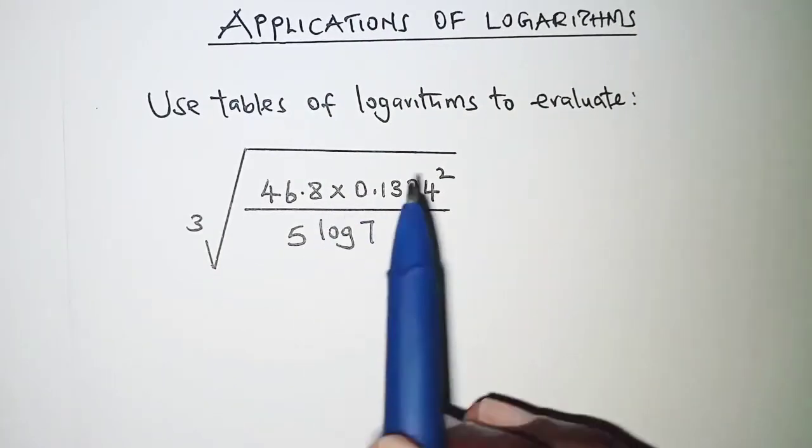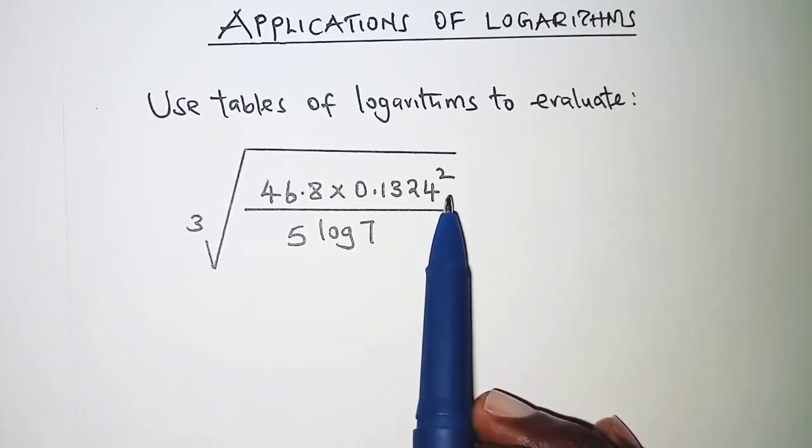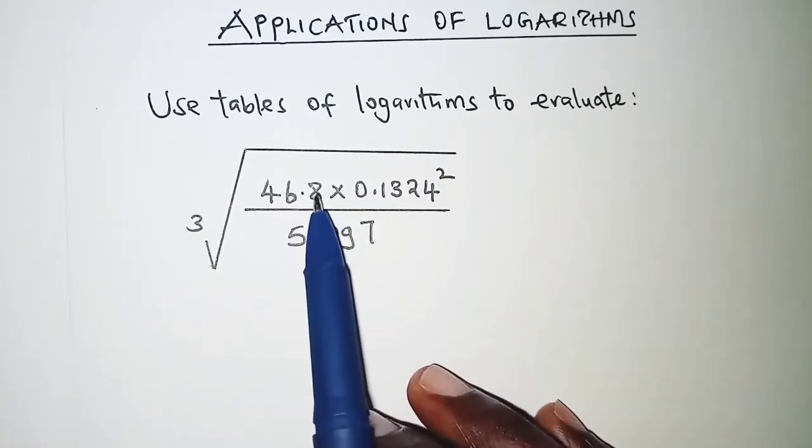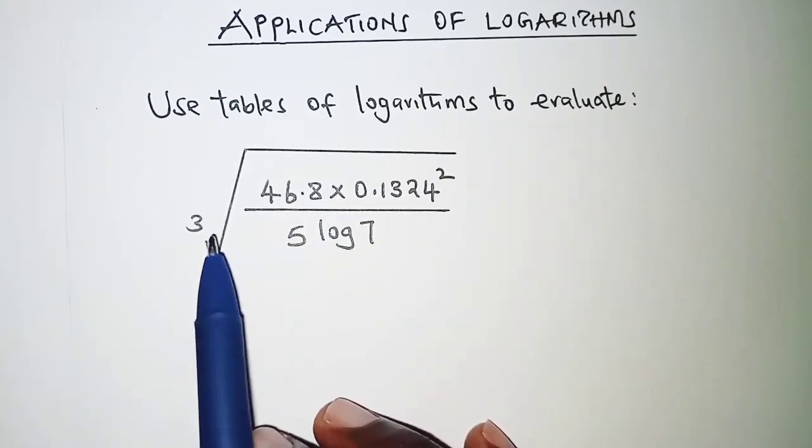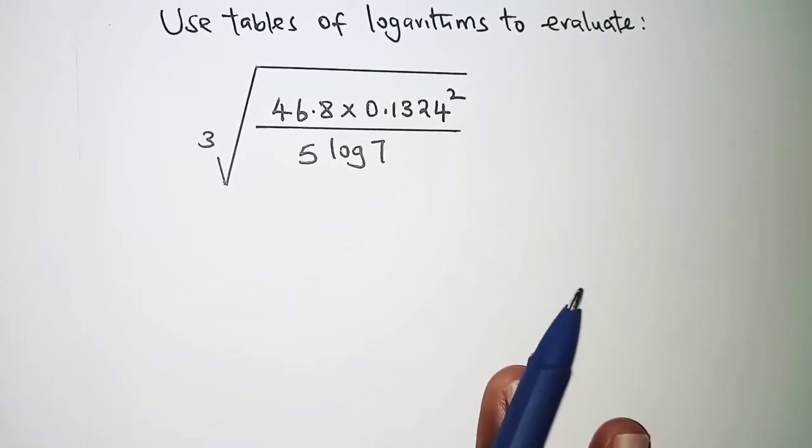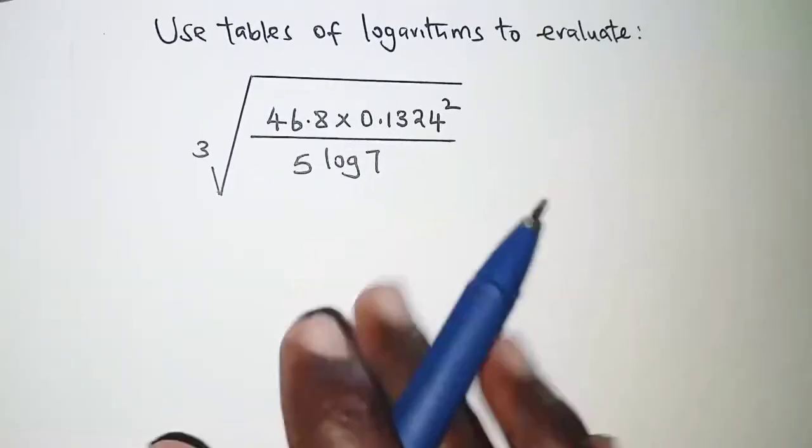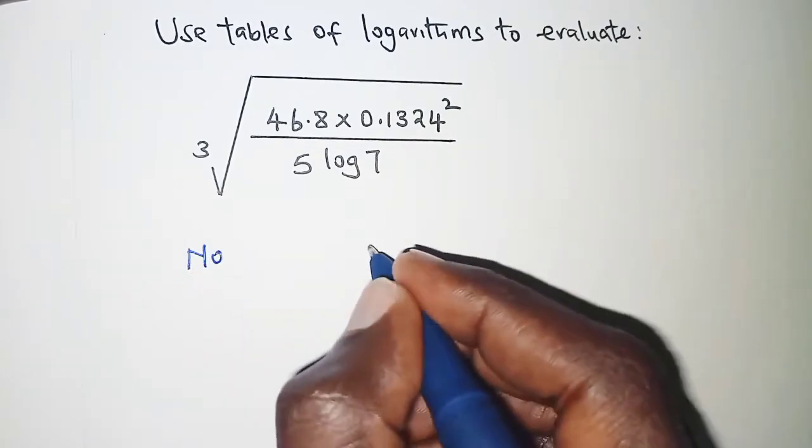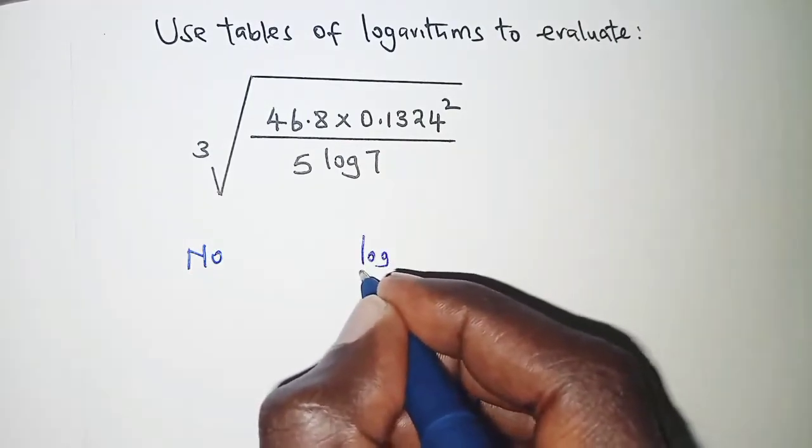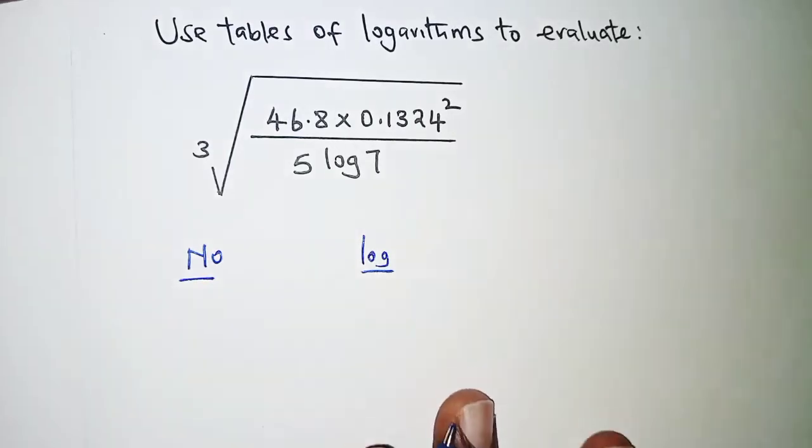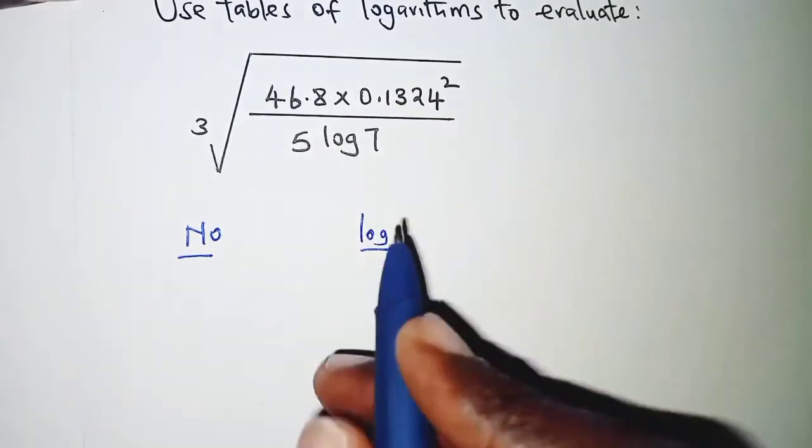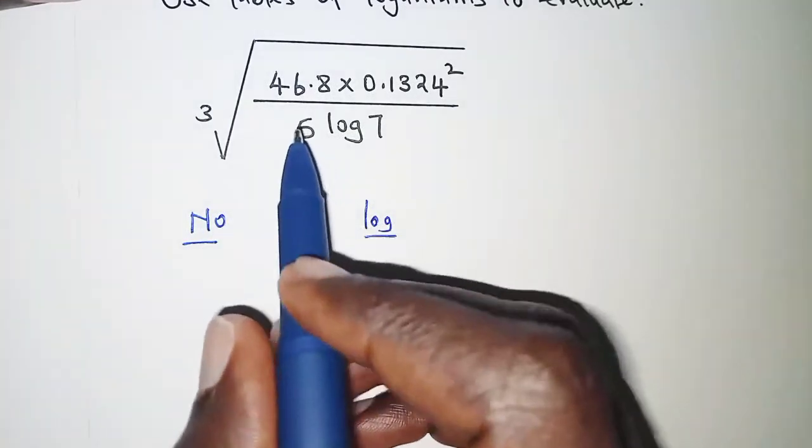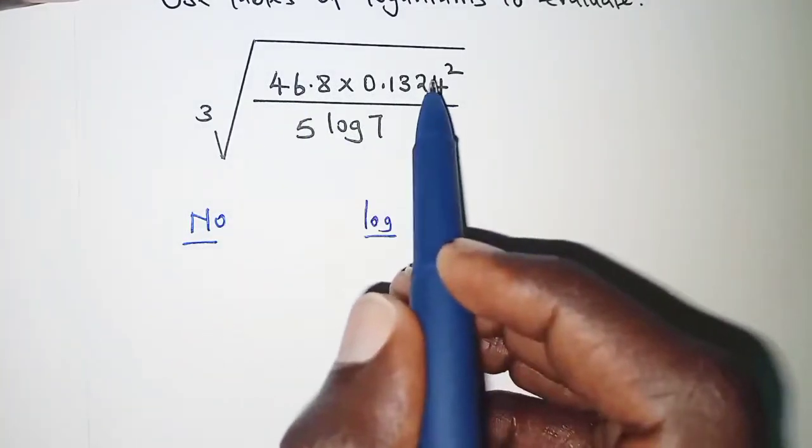In this problem we are first going to work out the logarithms of values under the root sign and then later deal with the root sign. To begin, we will form a table with a column for the number and the logs. We are going to begin with the numerator under the root sign.